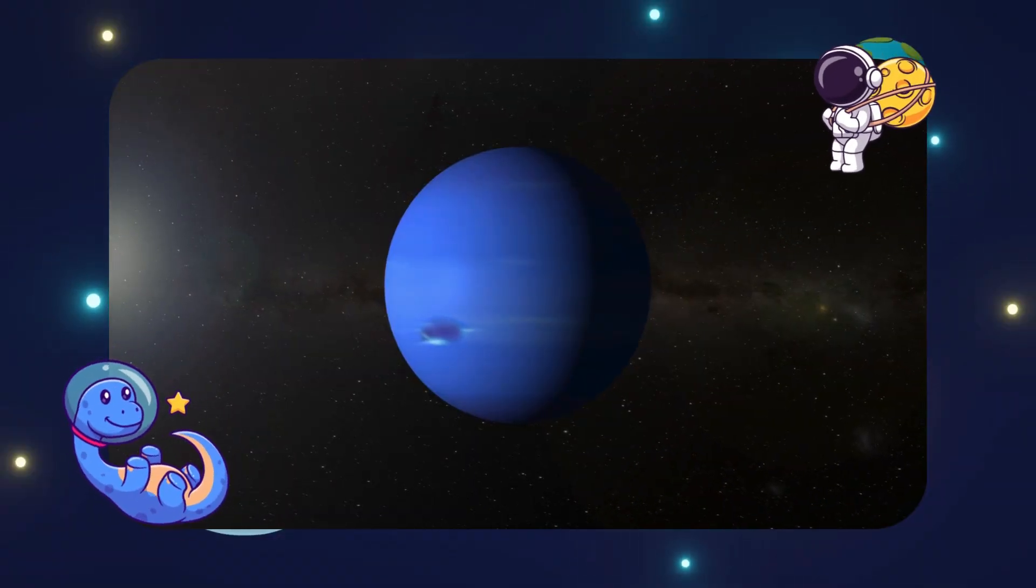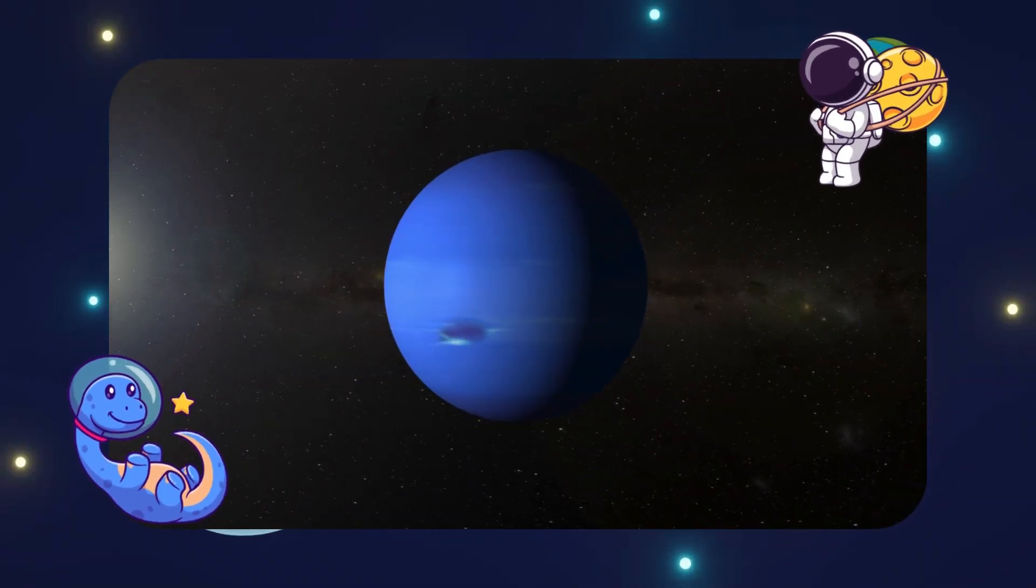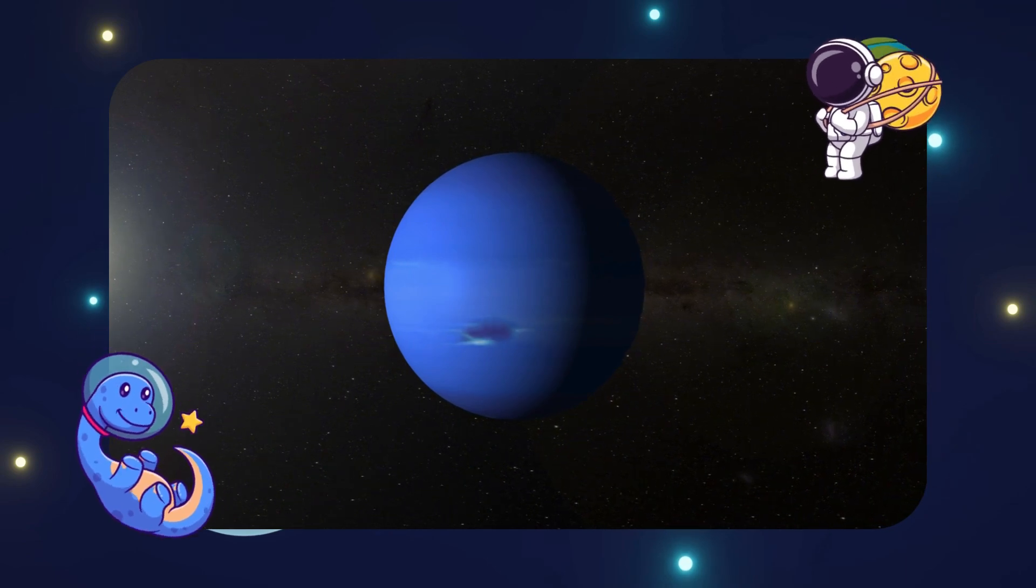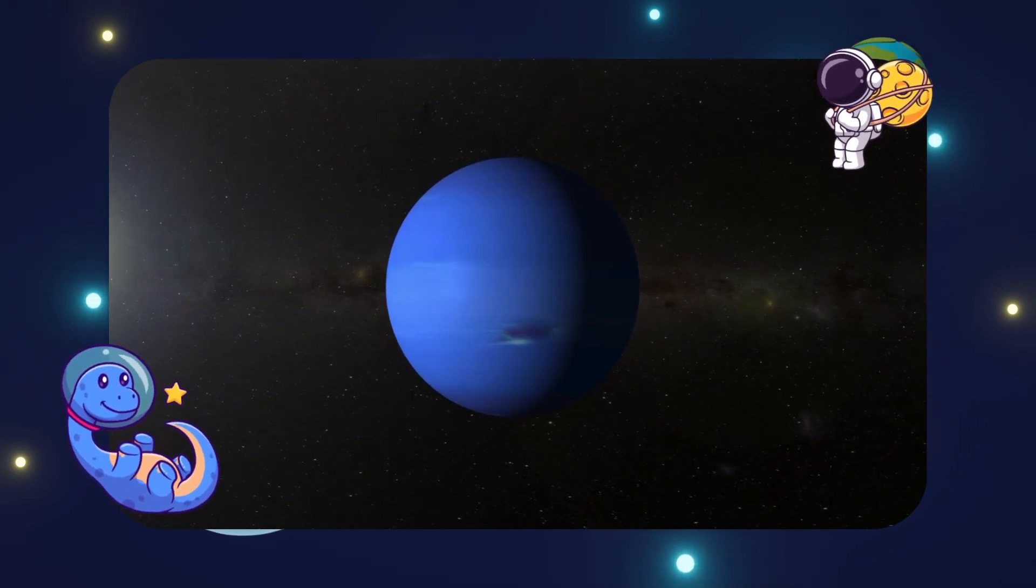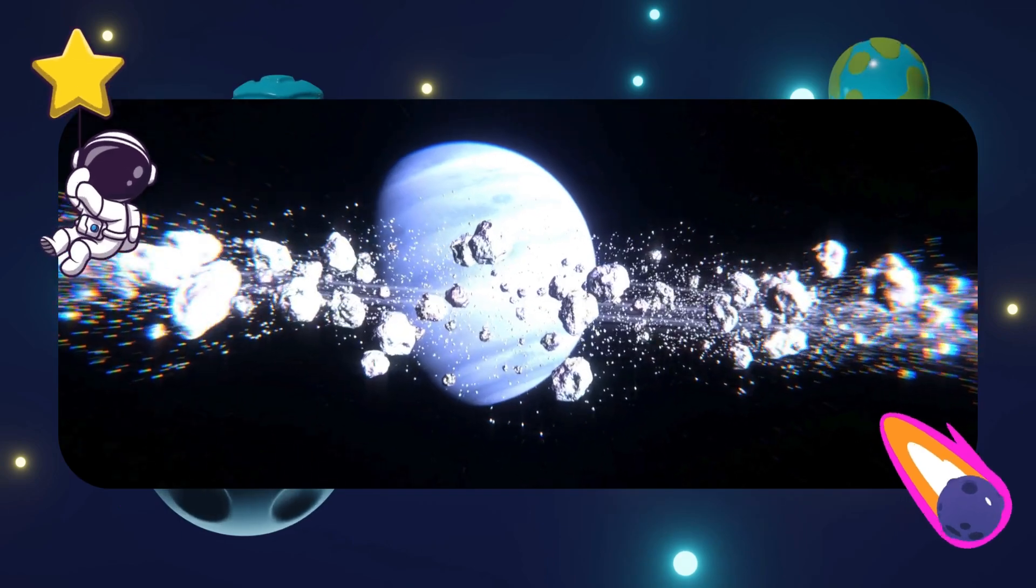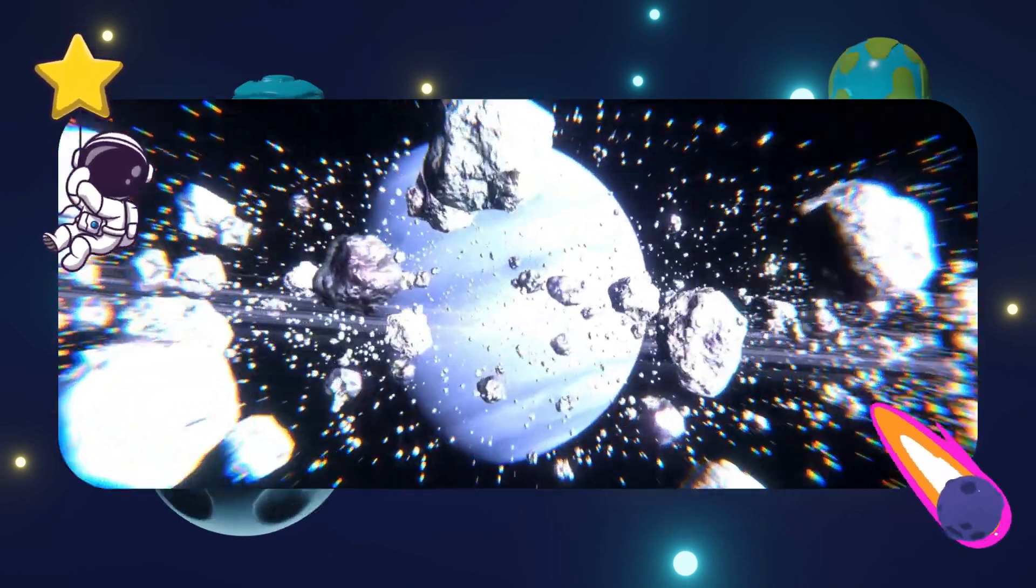Now the last one Neptune. Neptune is the farthest planet from the sun. It's dark, windy, and very, very cold, with the fastest winds in space.